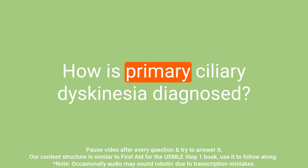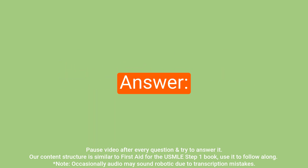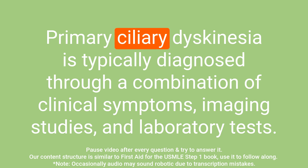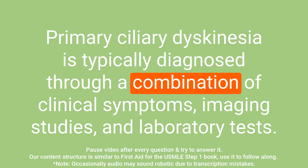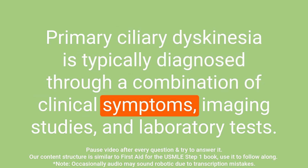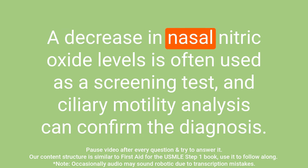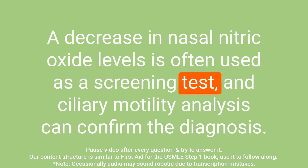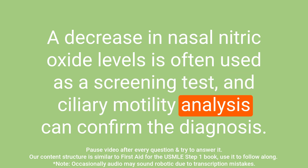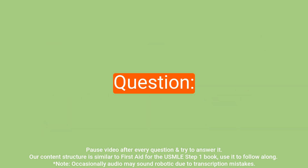Question: How is primary ciliary dyskinesia diagnosed? Answer: It is typically diagnosed through a combination of clinical symptoms, imaging studies, and laboratory tests. A decrease in nasal nitric oxide levels is often used as a screening test, and ciliary motility analysis can confirm the diagnosis.